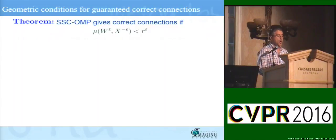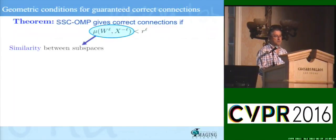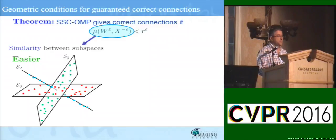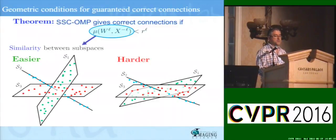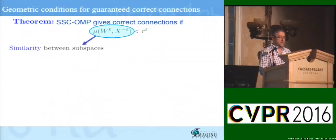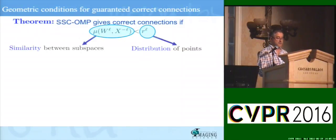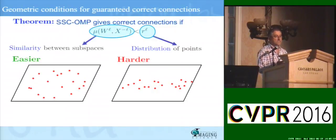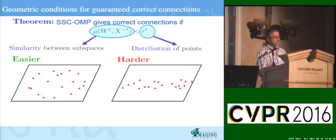Our work has shown that this algorithm is guaranteed to give the correct connections provided that a geometric condition is satisfied. The quantity on the left, mu, measures how similar two subspaces are — essentially the cosine of the angles between the subspaces. Evidently, if the subspaces are very separated it should be easier to cluster, and if they're very close it should be harder. The quantity on the right, R, measures how well distributed the data is inside the subspaces: if the data is well spread out the radius is large; if concentrated in one direction, the radius is small. The theorem nicely captures the geometry of the problem.